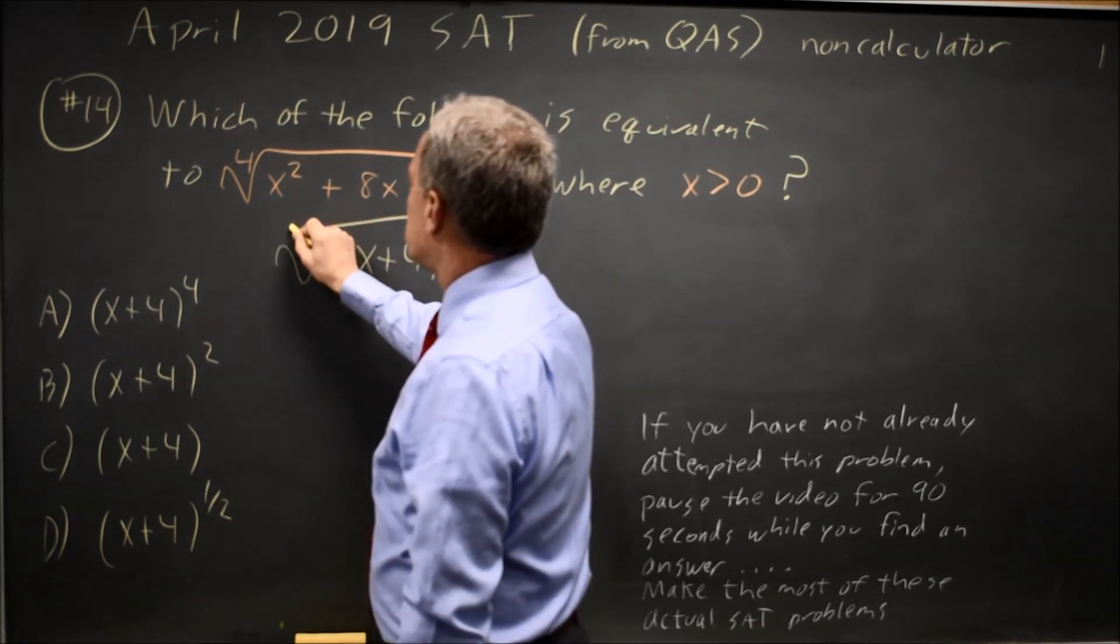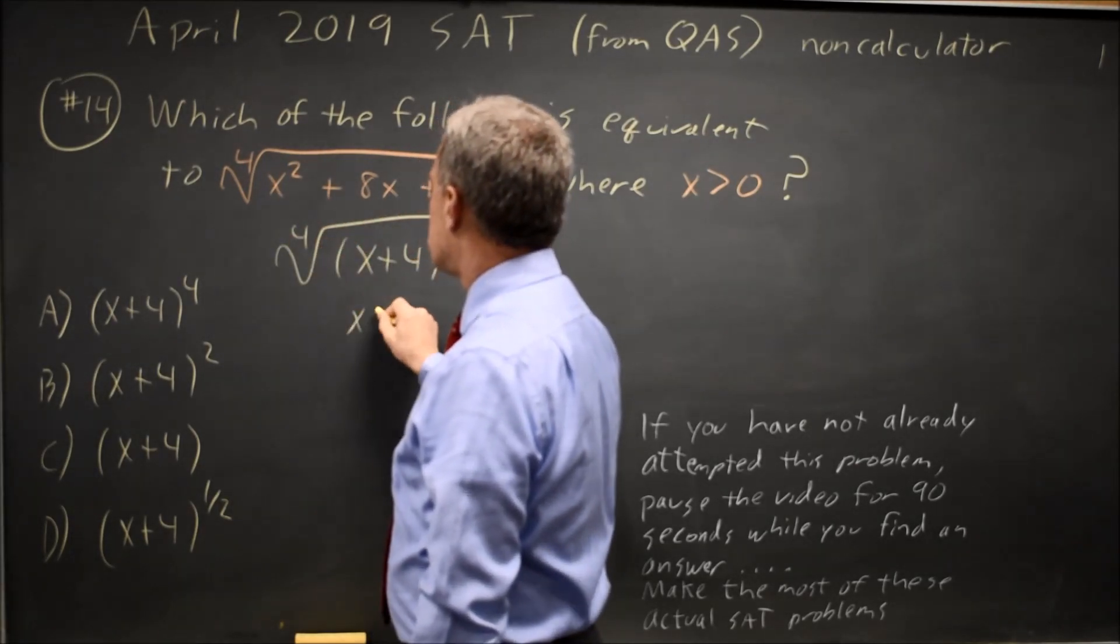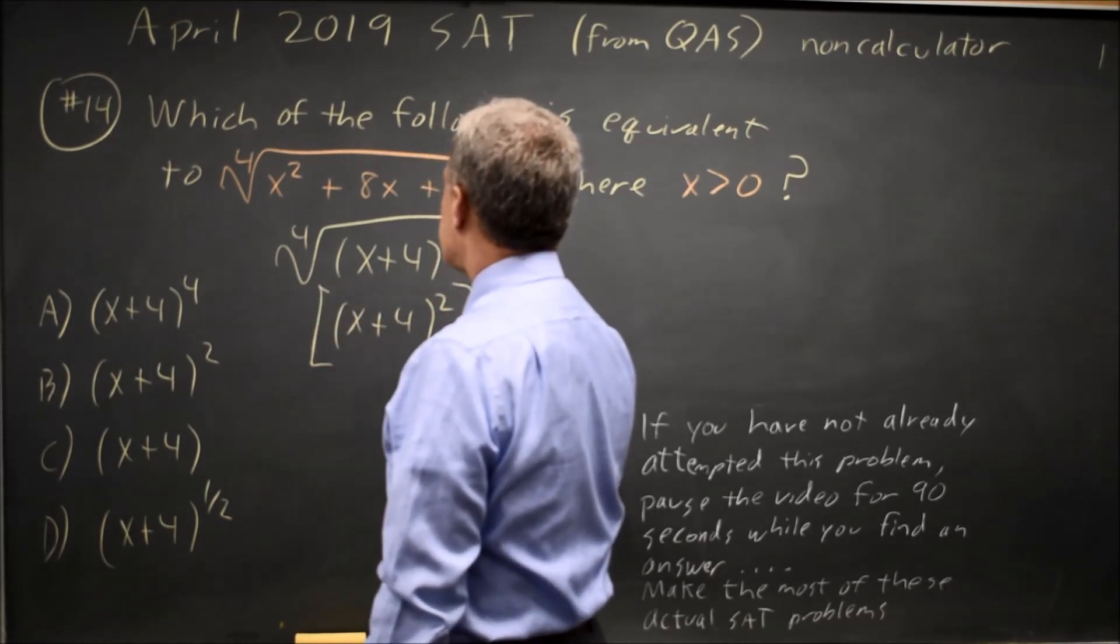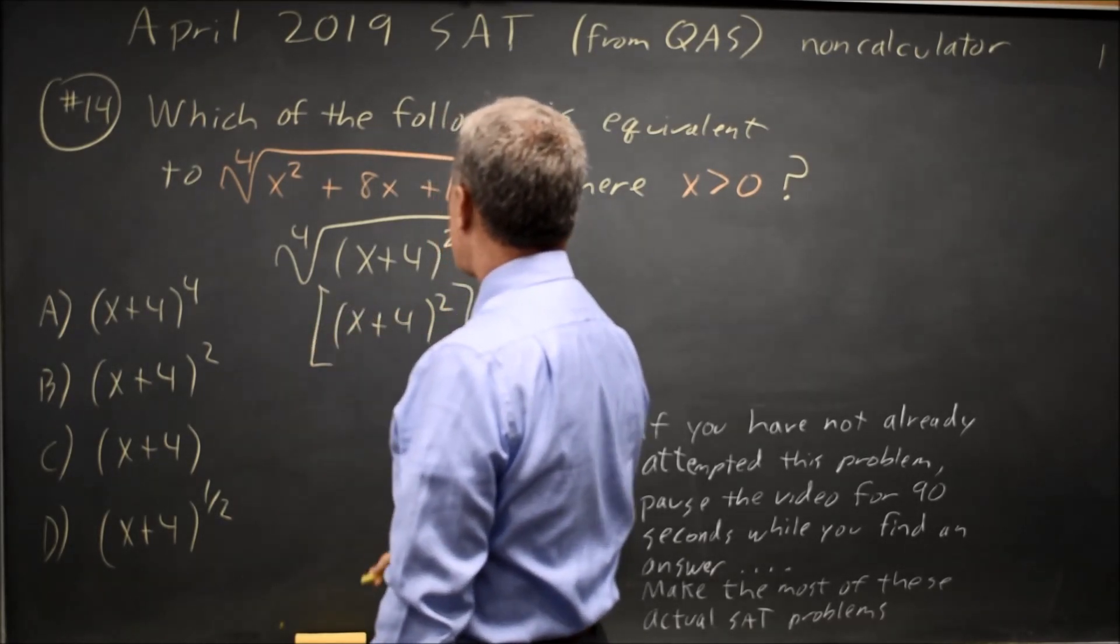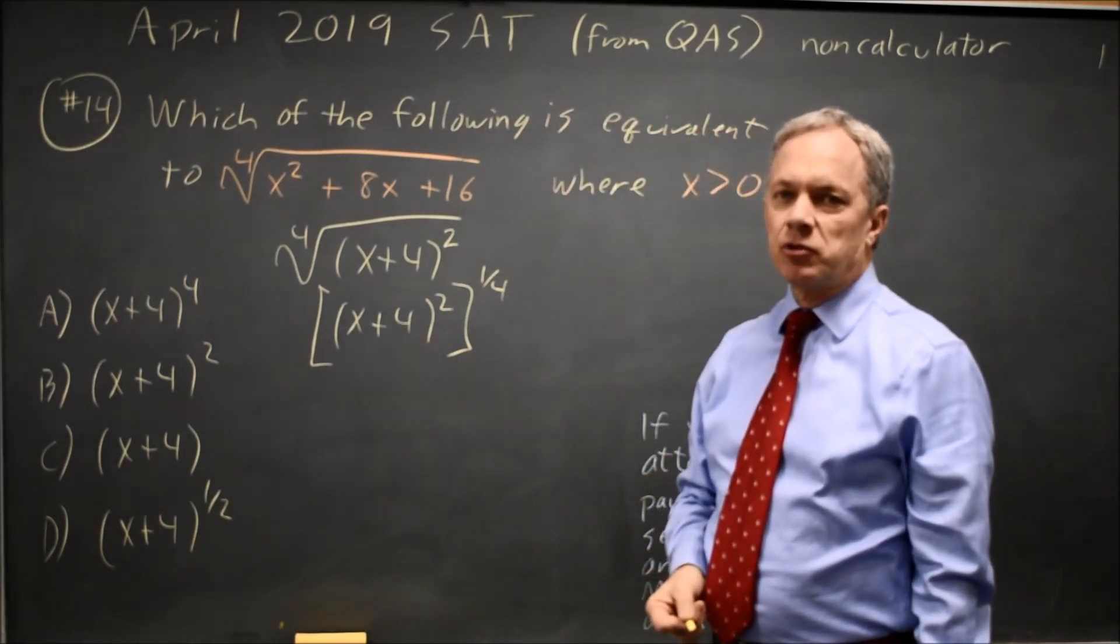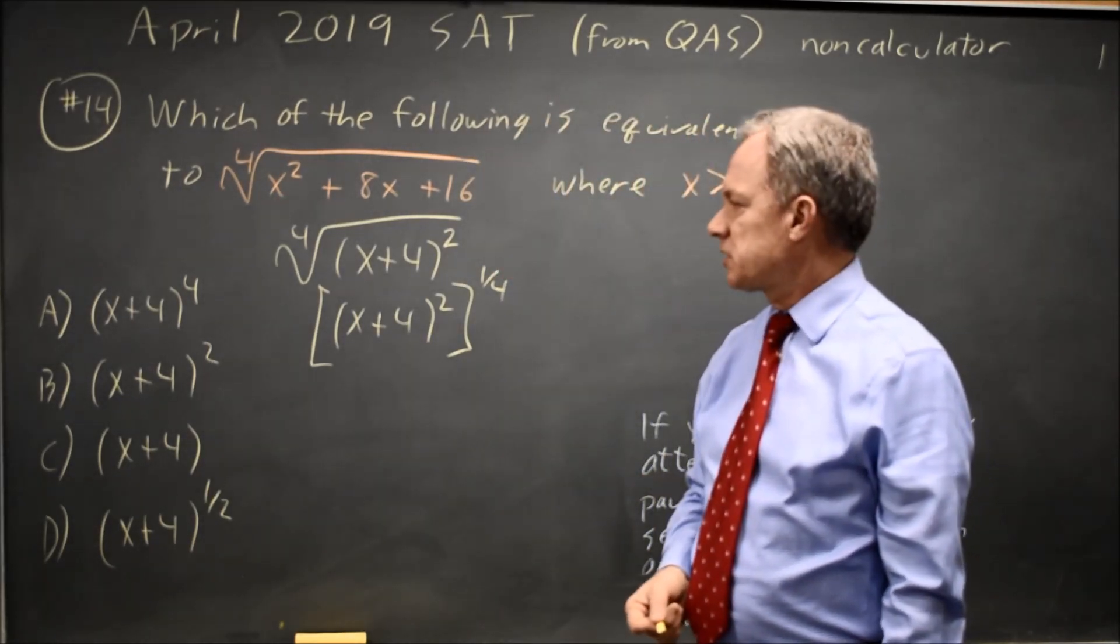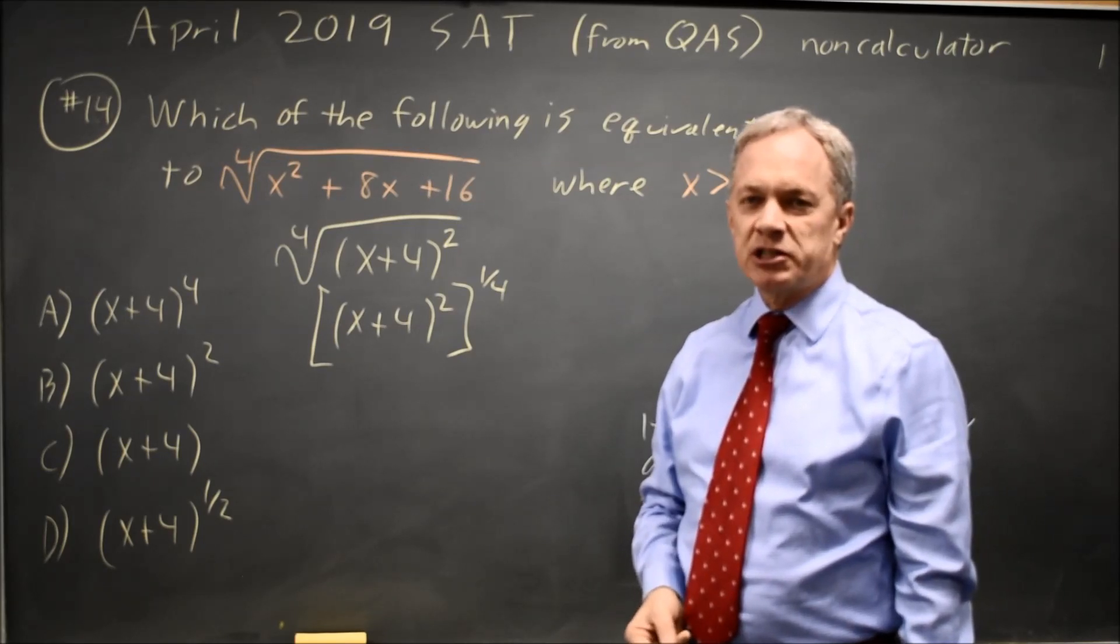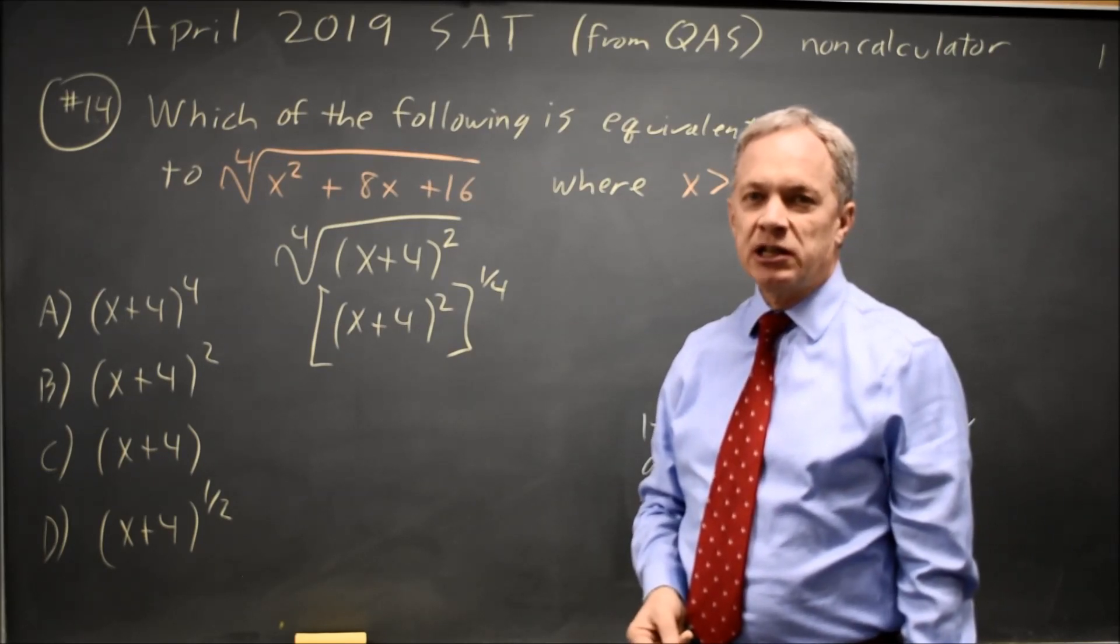So I have the fourth root of x plus four squared, and a fourth root is the same as a one-fourth power. You do need to know that rule, and College Board frequently tests it. In fact, I'll have a playlist of similar questions, and I'll post a link to that below in the comments.